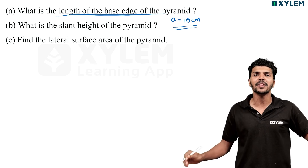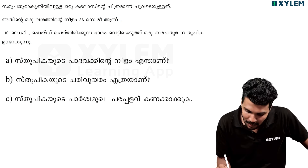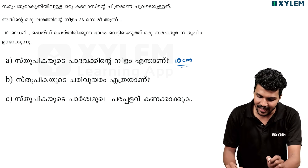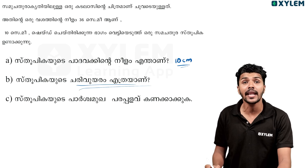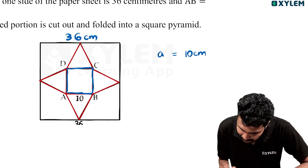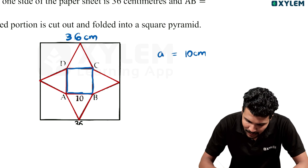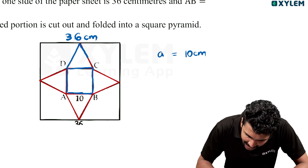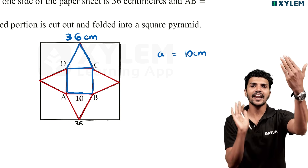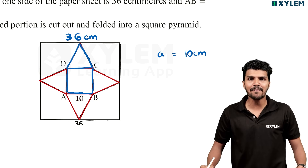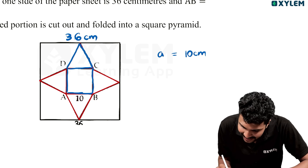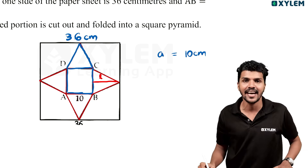The first question is: what are the answers? It's very simple. This question involves a triangle — a lateral face — this is a square pyramid. Here we can find a triangle; this triangle has a slant height.